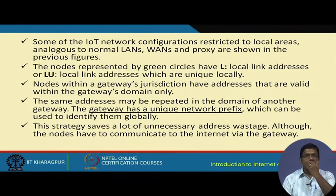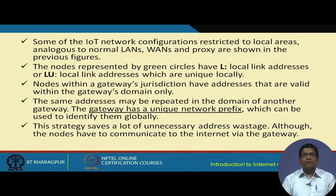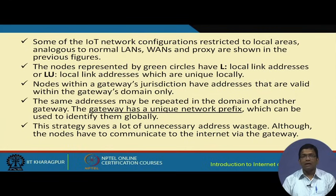Some IoT network configurations are restricted to local areas, very analogous to internet LANs, WANs, and proxies. The nodes within a gateway's jurisdiction have addresses that are valid only within that gateway's domain, and the same address may be repeated in another domain. The gateway has a unique network prefix which can be used to identify it globally, and this strategy saves a lot of address wastage, although nodes have to communicate to the internet via the gateway.